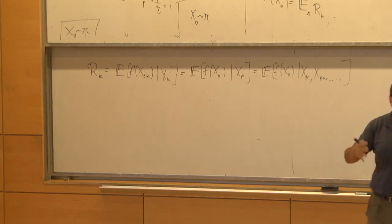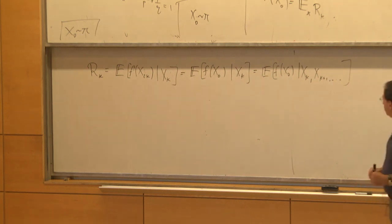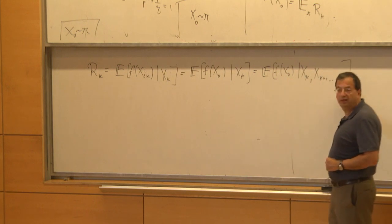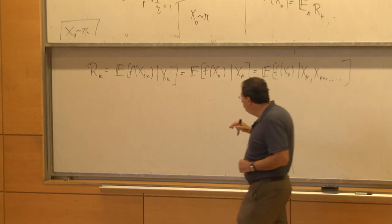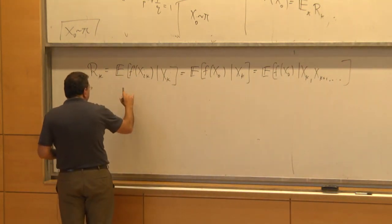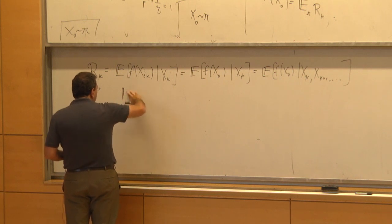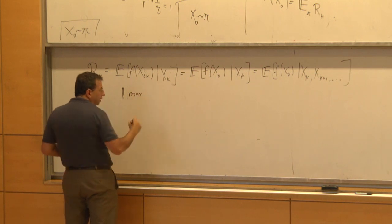You have a decreasing sequence of sigma algebras, you're conditioning on it, and you're taking one fixed random variable conditioned on a decreasing sigma field — that's a reverse martingale by definition. So what does Doob's maximal inequality say? It allows you to bound the maximum of a martingale by the last term.